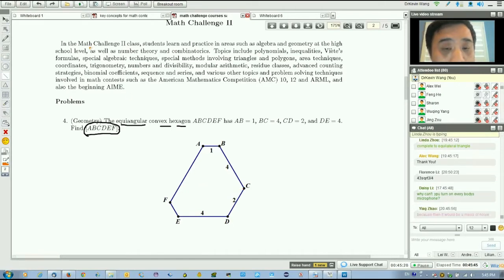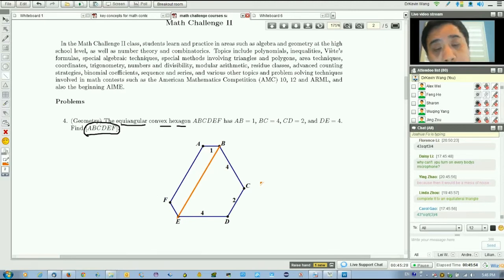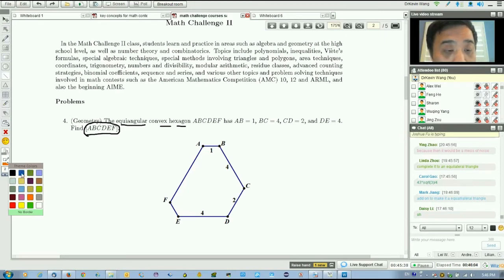You can cut it with horizontal lines into two isosceles trapezoids and calculate those sizes. But the most straightforward way to do this is to extend it—think outside the box.